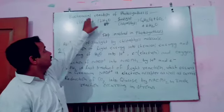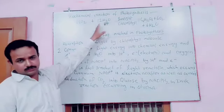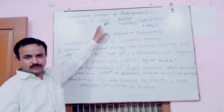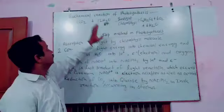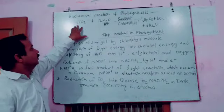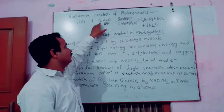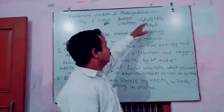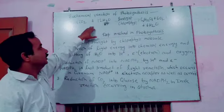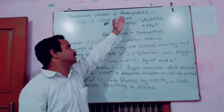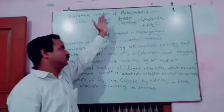Now let us discuss the biochemical reaction of photosynthesis. The overall reaction of photosynthesis is: 6CO2 + 12H2O → C6H12O6 (glucose) + 6O2 + 6H2O. This is the reaction of photosynthesis, which requires sunlight and chlorophyll molecules to proceed.